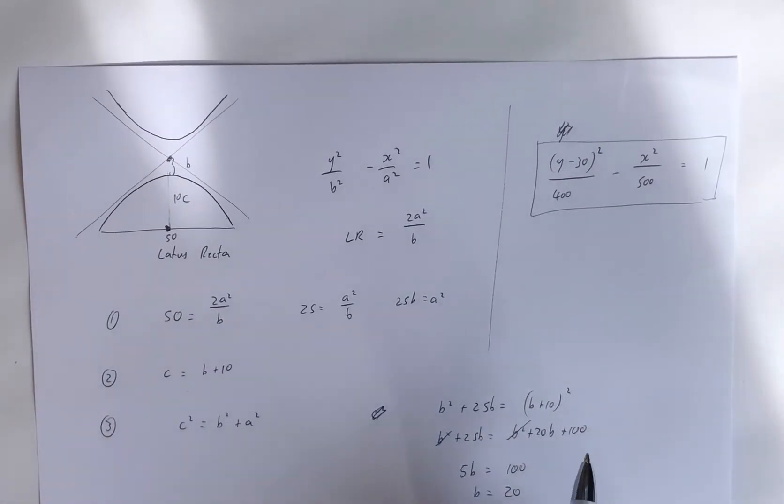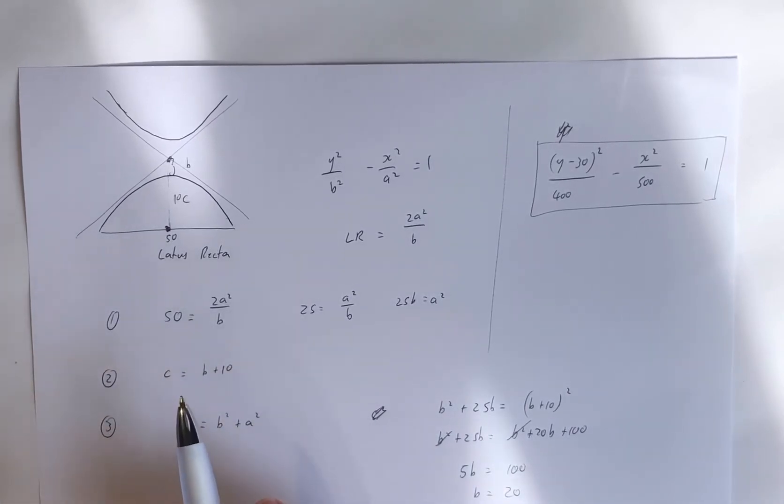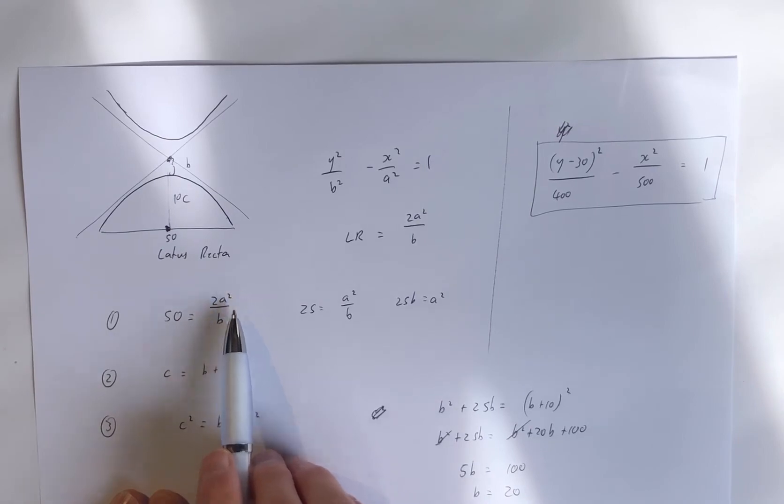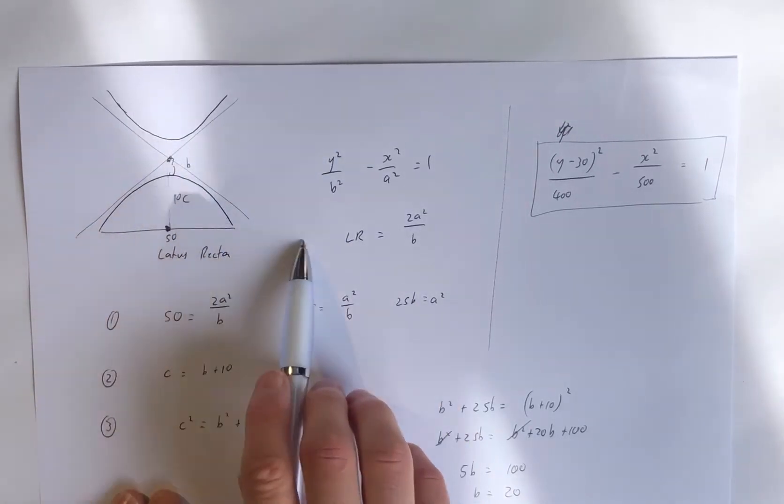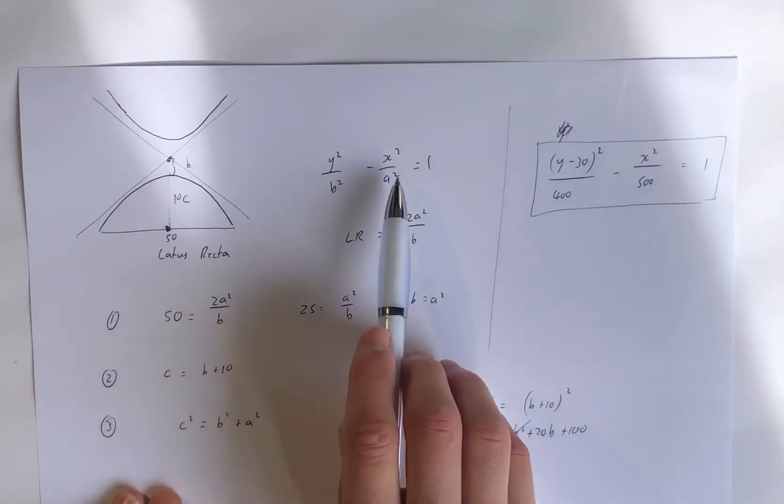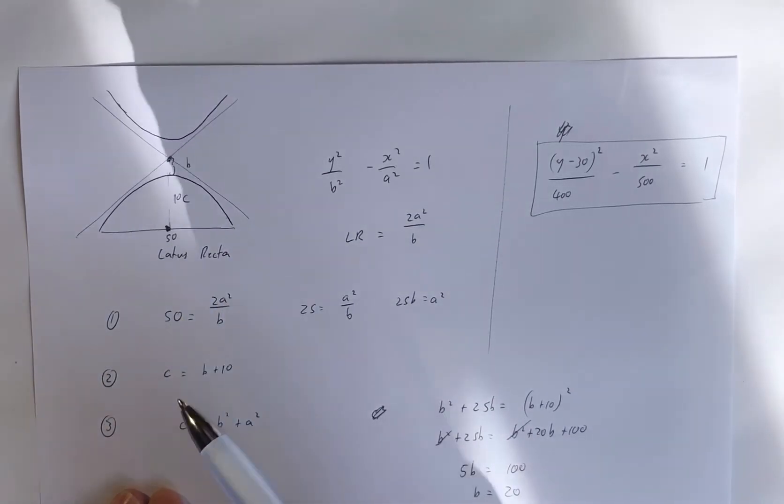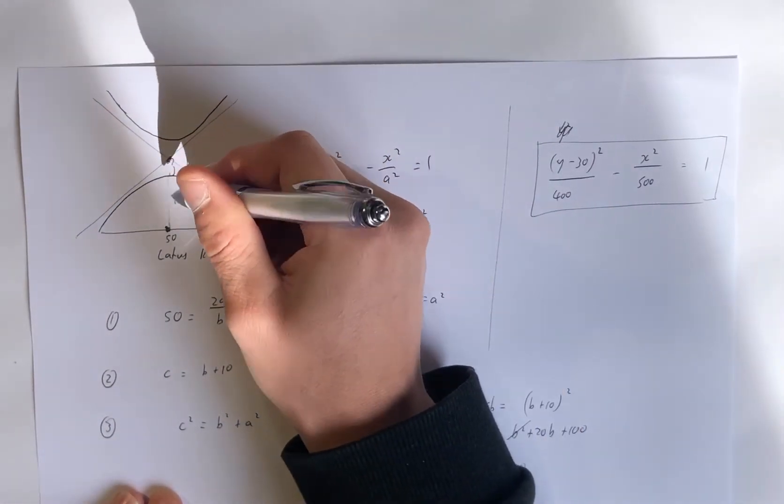So what you need if you're ever doing a hyperbolic roof design is you need the lattice rectum, which is 2a squared over b when it's orientated this way. It's 2b squared over a when it's orientated that way. So just remember they've been switched around. So 2a squared over b.